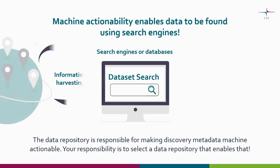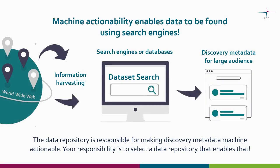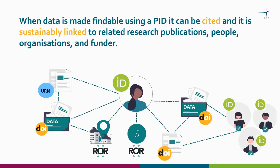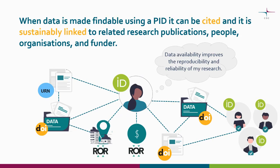Data and metadata that computers can process correctly facilitates research. Machine actionability makes your outputs visible for search engines or services like Google or Web of Science, meaning your data will reach a larger audience and have better chances to be reused and cited. Making discovery metadata machine actionable is the responsibility of the data repository; however, it is your responsibility as a researcher to select a repository that enables that. Making data findable is easy if you plan ahead and find a suitable service. It is important that you get a persistent identifier and have sufficient discovery metadata so your data can be found, cited, and sustainably linked to the article, authors, publisher and funding authority. Making data available also improves the reproducibility and reliability of research.